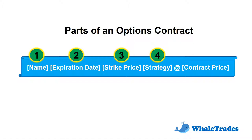The fourth item is the strategy. This means the expectation of the price of the item you are interested in. If it is a call, it means the expectation for the item has a tendency to go higher, and you would like to buy into the item at the agreed price instead of the future higher price. Lastly, the fifth component is the contract price, or we also call it the options price — this is the amount of money that you will be paying or receiving for this contract.